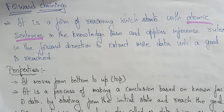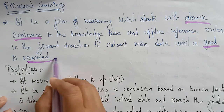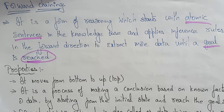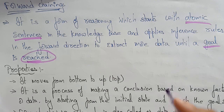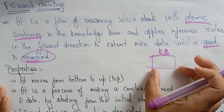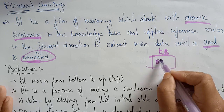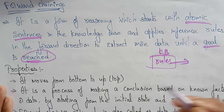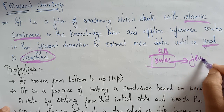Whatever concept you are taking in Artificial Intelligence, whatever technique you are taking, the thing here is we need to reach a goal. If you are reaching the goal, that technique is satisfied. In forward chaining, we first use the atomic sentence in the knowledge base and apply the inference rules in the forward direction. Whatever rules are there, those are applied in the forward direction.